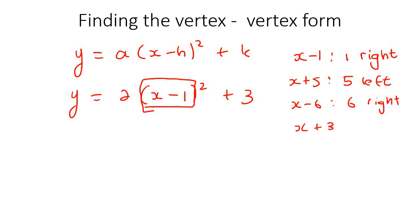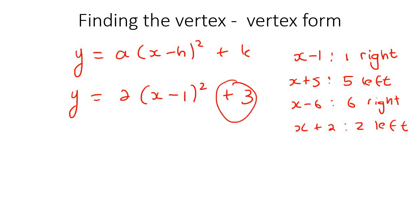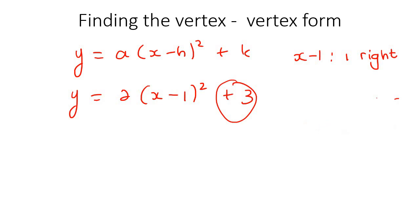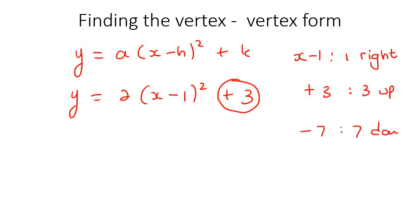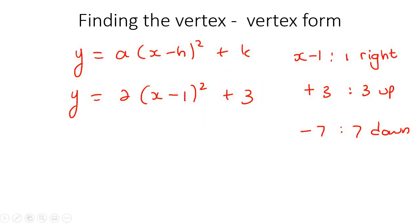If it said x plus 2, then it would be 2 to the left. So plus means left, minus means right. Now the part outside the bracket — the constant added at the end — tells us whether the vertex has moved up or down, and this is not opposite. So if it says plus 3, it means 3 up. If it said minus 7, it would mean 7 down. This part is not the opposite, but the bracket part is.